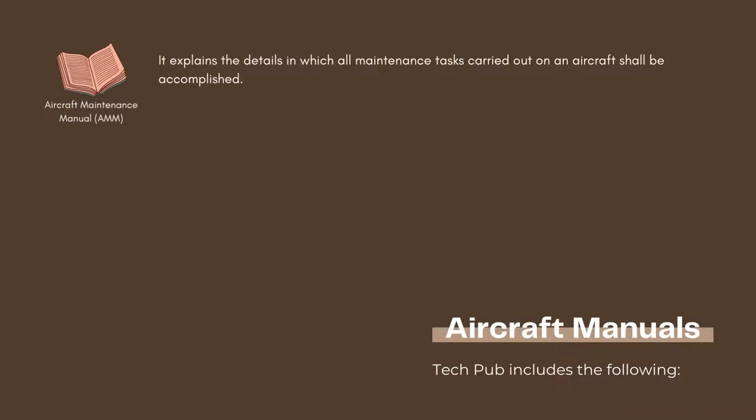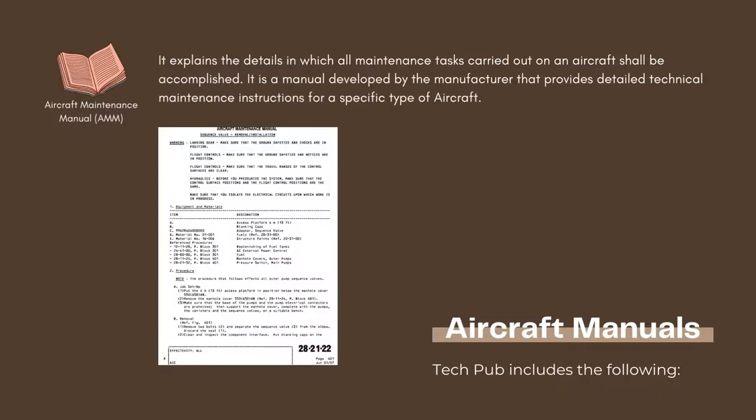The aircraft technical publication documentations include the Aircraft Maintenance Manual. It explains the details in which all the maintenance tasks carried out on an aircraft shall be accomplished. It is a manual developed by the manufacturer that provides detailed technical maintenance instructions for a specific type of aircraft.